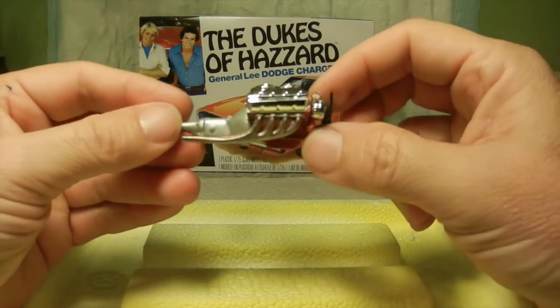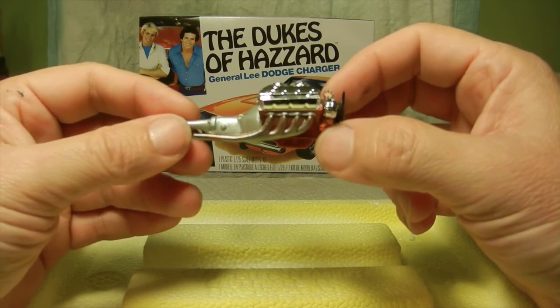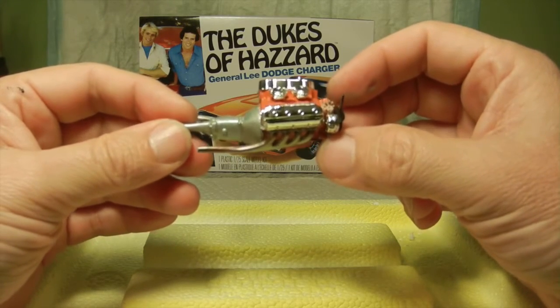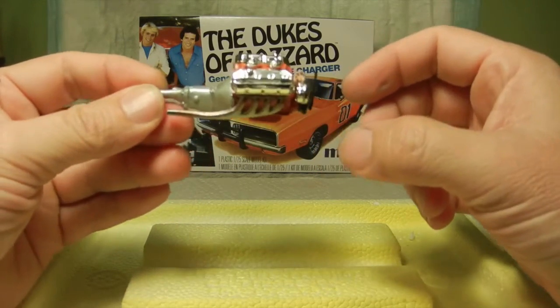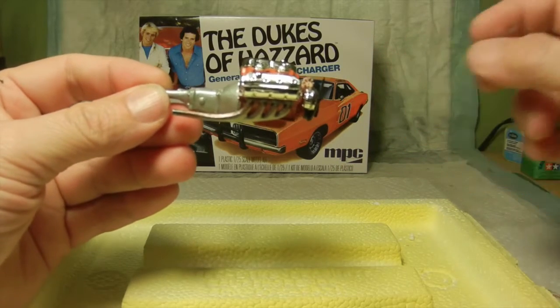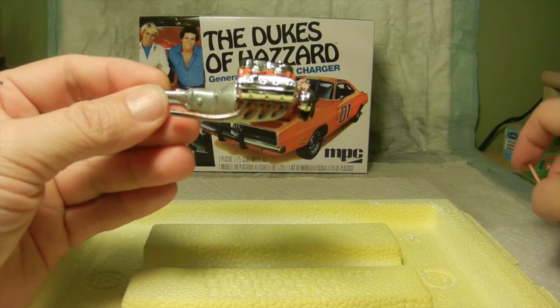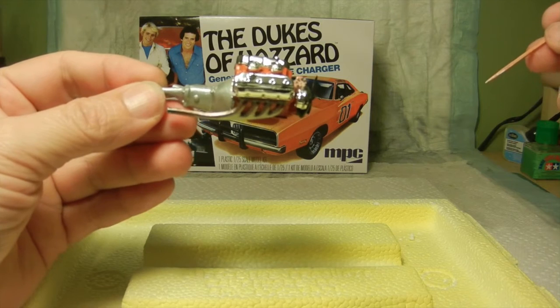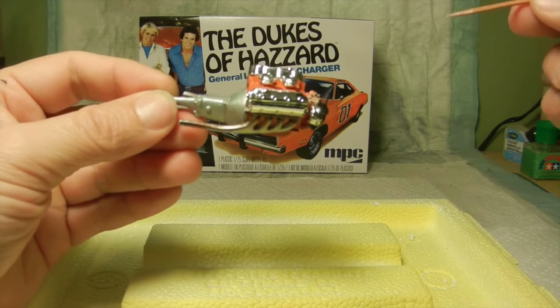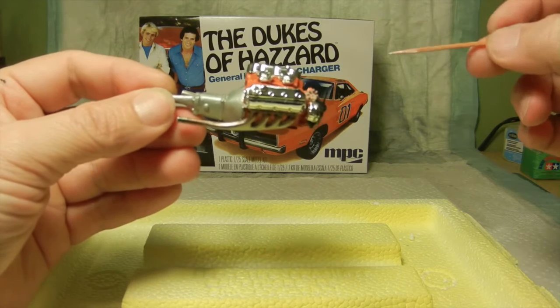Other than that, the rest of the engine was put together pretty easy. I did use, to start off with, for a primer was my FolkArt Steel Grey, and I just hand painted everything for the primer.